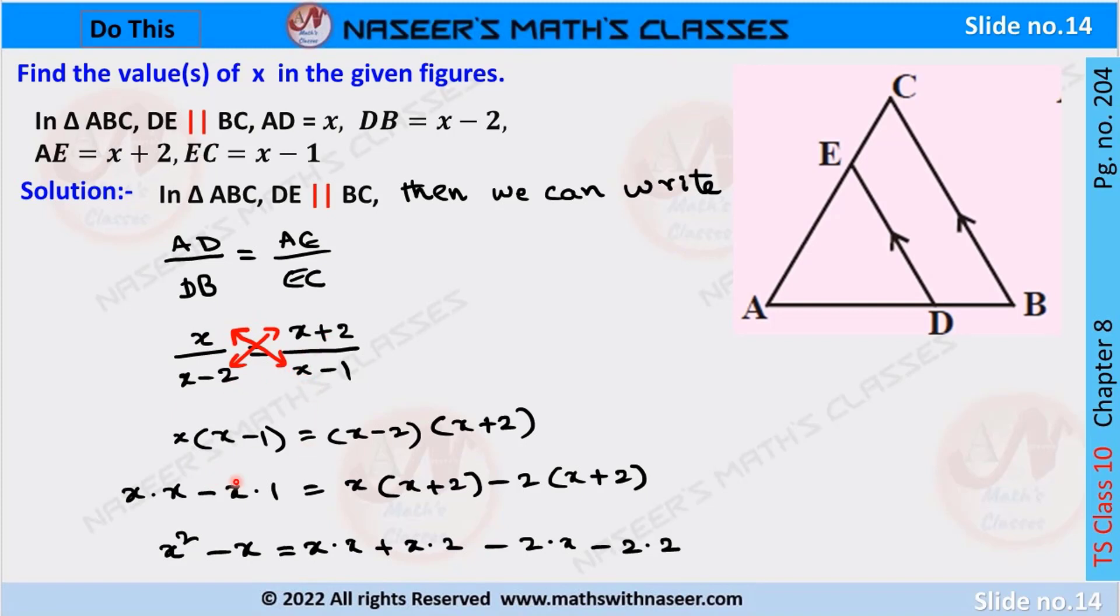By applying the distributive law we can write it as x into x minus x into 1 is equal to x into x plus 2 minus 2 into x plus 2. So x into x is written as x squared minus x into 1 is written as x. In RHS by applying the distributive law we can write it as x into x plus x into 2 minus 2 into x minus 2 into 2.